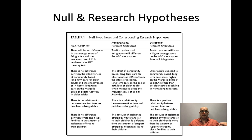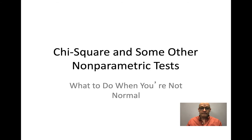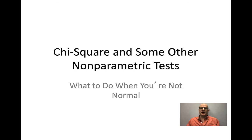Let's move on to contingency tables and chi-square. Contingency tables and chi-square are non-parametric tests, meaning they aren't based on the mean or a normal distribution. The world doesn't always have normal distribution outcomes, and sometimes we need to think about different ways to analyze data.